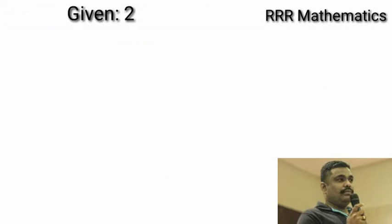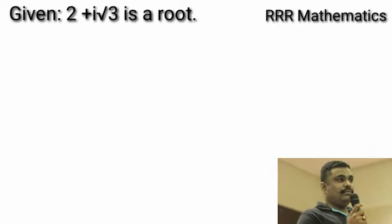Given, 2 plus i root 3 is a root. Since 2 plus i root 3 is a complex number, therefore the conjugate of 2 plus i root 3, that is 2 minus i root 3, is also a root.